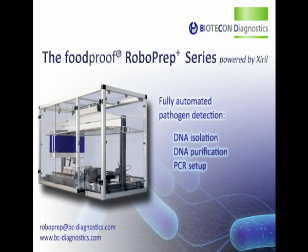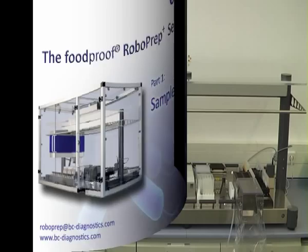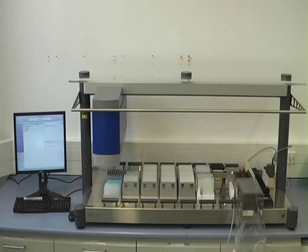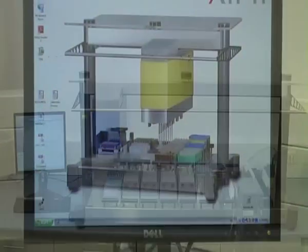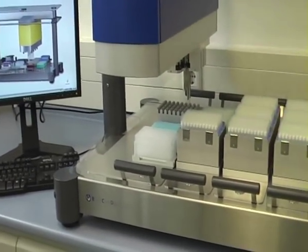The entire process, from DNA isolation to the final setup of the PCR plate, is automated, thus minimizing errors and making high-throughput pathogen testing efficient and easy. In this video, we will demonstrate the basic steps of DNA isolation and PCR setup for Salmonella detection as performed on the Foodproof RoboPrep Plus 158 workstation.